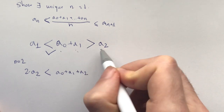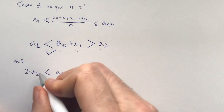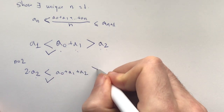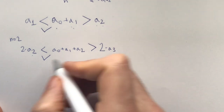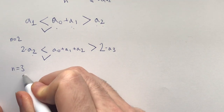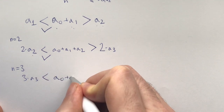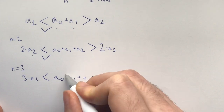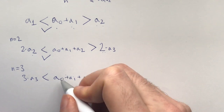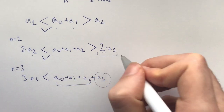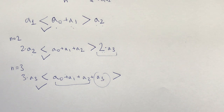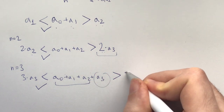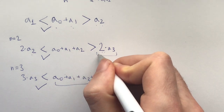This would be true because a_0 plus a_1 is greater than a_2. But if the problem statement did not hold, we would need this to be strictly greater than 2 times a_3. Assuming this is true, for n equals 3, we would have 3 times a_3 less than a_0 plus a_1 plus a_2 plus a_3, which would also be true. And if we did not have even one positive integer such that the problem statement held, then we would have this greater than 3 times a_4.